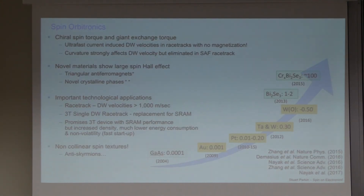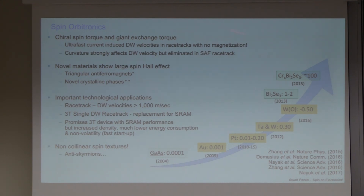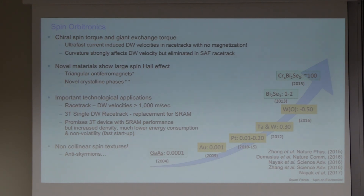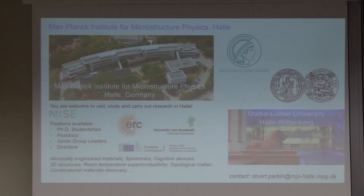To summarize: spin orbitronics is a very interesting evolution of spintronics over the last three or four years, leading to the discovery of several new unanticipated phenomena, including very large spin Hall effects in non-collinear triangular spin systems and many simple metals, enormous chiral spin torques, and a giant exchange torque. Together these lead to domain wall velocities induced by current ten times higher than was theoretically possible just three or four years ago, making racetrack memory technology super interesting. If any of you are interested in a position at Halle, please email me. Thank you very much.